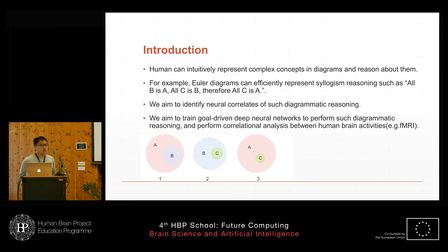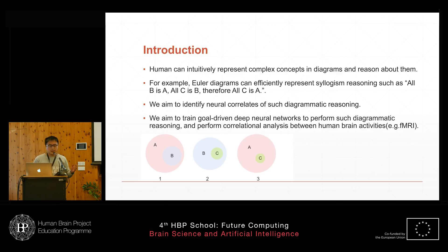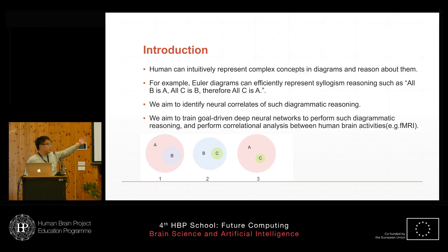So first, what are diagrams? We humans actually use diagrams to represent complex concepts and help to reason about them in our everyday life. For example, you can use a map to help you navigate through a city. In your high school physics class, you can use a pulley system diagram to help you solve the pulley system problem. And in this specific example, you can use the Euler diagram to solve a very classical logical task called syllogism reasoning, such as: all B is A, all C is B, therefore all C is A — where 'all C is A' is the conclusion.